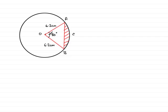In this example I've got a circle with a radius of 6.2 centimeters and the angle subtended between the two radii is 80 degrees.